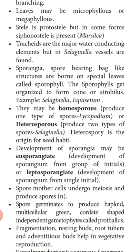Development of sporangia may be eusporangiate or leptosporangiate. Eusporangiate means the sporangia develop from a group of initial cells. Leptosporangiate means the sporangia develop from a single initial cell.